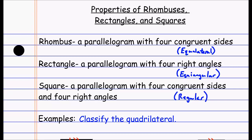A parallelogram is a quadrilateral where both pairs of opposite sides are parallel. A rhombus adds all sides congruent, a rectangle adds all angles congruent, and a square has both. This makes classification tricky: a square is a rhombus and a rectangle, and also a parallelogram. So when you see a square, you classify it as a parallelogram, a rhombus, a rectangle, and a square — work through that progression and list all that apply.